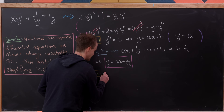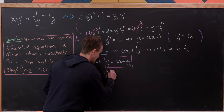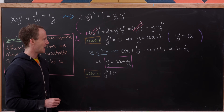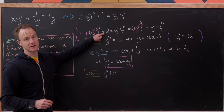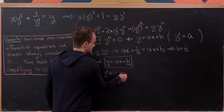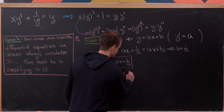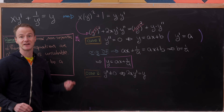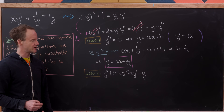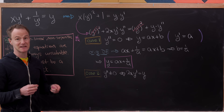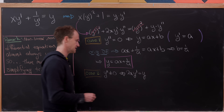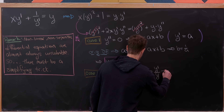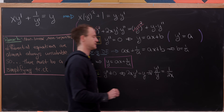The second case is when y double prime is not identically equal to zero. If y double prime is not identically zero, we can cancel it from both sides of the equation. That leaves us a new, simpler differential equation: 2x times y prime equals y. This is a separable differential equation, so we can use separation of variables. I'll write this as y prime over y equals 1 over 2x.